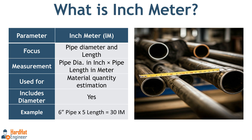For example, if you have a 6 inch pipe that's 5 meters long, the formula looks like this: inch meter equals pipe diameter in inches multiplied by length in meters. For example, 6 inch pipe multiplied by 5 meter pipe length equals 30 inch meter of pipe. This is useful when you want to estimate how much material is needed, taking both size and length into account. Inch meter gives you a sense of the material quantity considering both the size and the length of the pipe.